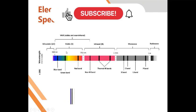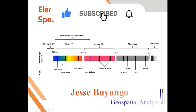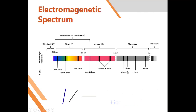For example, we have the blue band, the green band, the red band, the near infrared band, the thermal infrared band, the X band, the C band, L band, and P band. These can further be grouped into UV rays, visible rays, infrared rays, microwaves, and radio waves. Different parts of this spectrum are used for different types of remote sensing.